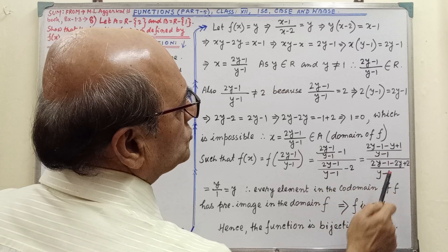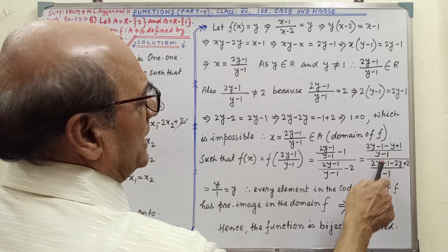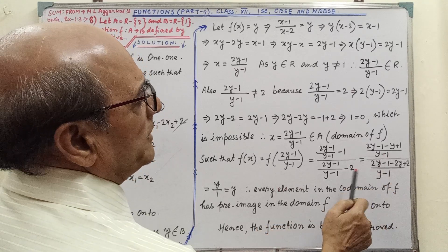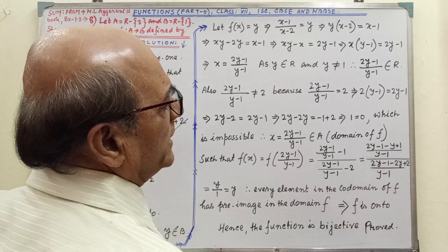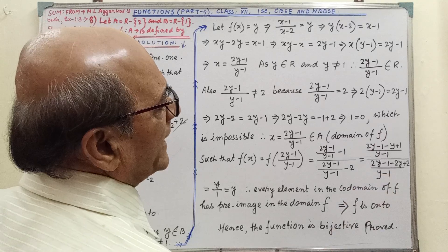that is LCM Y minus 1, here also will be the LCM Y minus 1, then by simplification this, this will be cancelled, then 2Y minus Y. 2Y plus 2Y minus Y, that is Y, and minus 1 plus 1 will be cancelled,